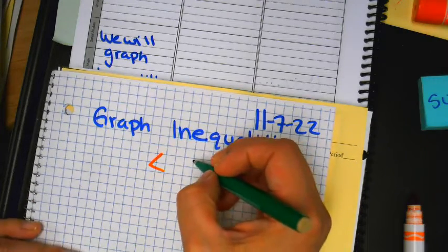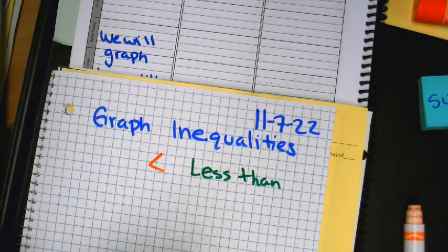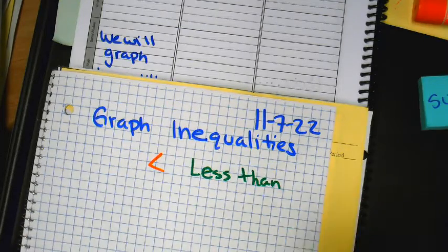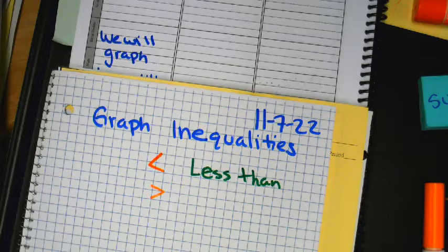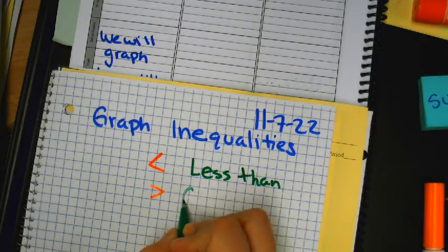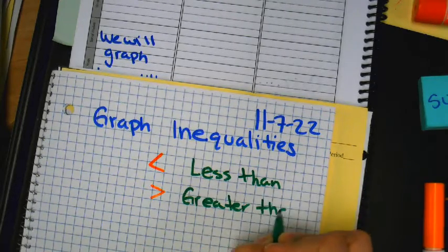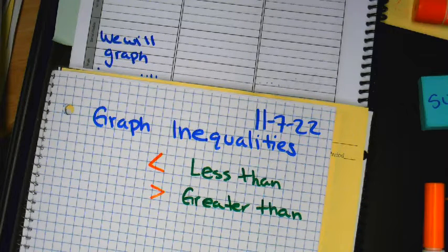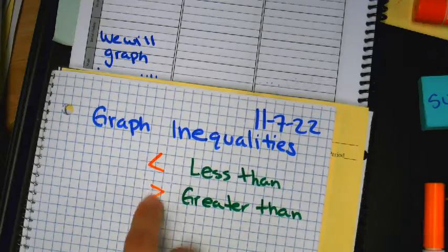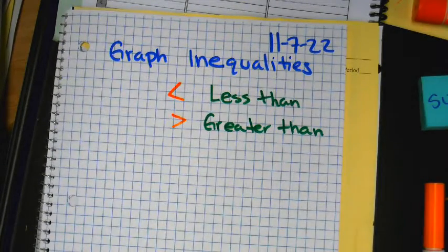This symbol is the less than. So write this down — this symbol is your greater than. Is a positive number the same thing as a negative number? No. They look similar, but they're totally different. So these are totally different symbols. They mean totally different things: less than, greater than.